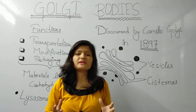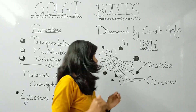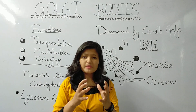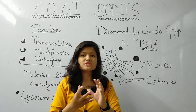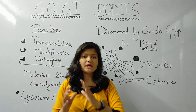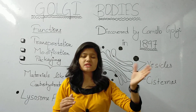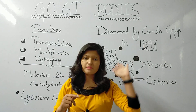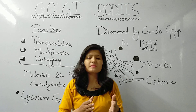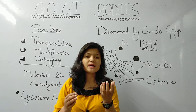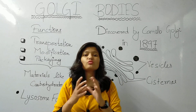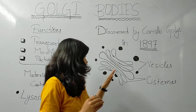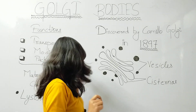Now, the functions of the Golgi apparatus. The first function is transportation. If material is produced and requires packaging or modification, the material is transported and secreted from the cell. This creates the cell's secretory products. The material exits the cell via Golgi bodies, so transportation is the first function.